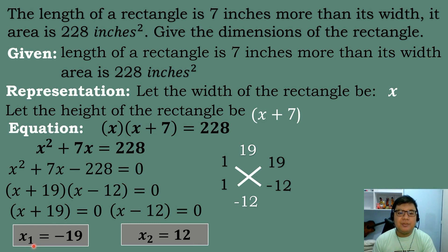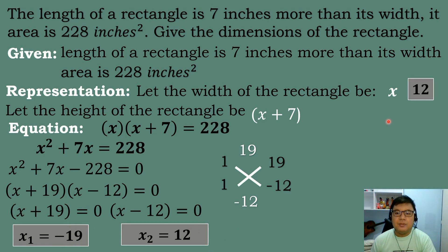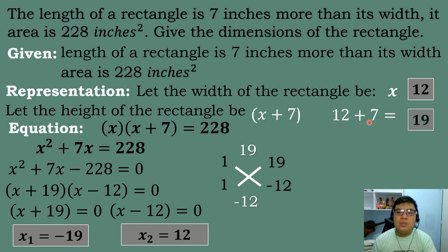Since we are looking for the length and width of a rectangle, the value of the roots must be positive because we are dealing with dimensions — there should be no negative value. So negative 19 is not our answer. The value of x equals 12. Therefore, the width of the rectangle is 12 and the length is 19, since 12 plus 7 equals 19.